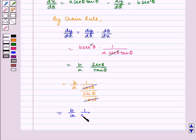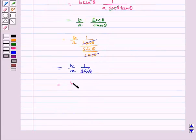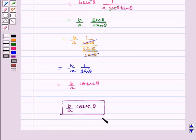Which is equal to b by a cosec theta, which is our dy by dx. Hence the required answer is b by a cosec theta. I hope you answered the question. Bye and have a nice day.